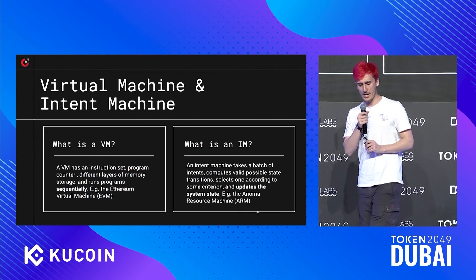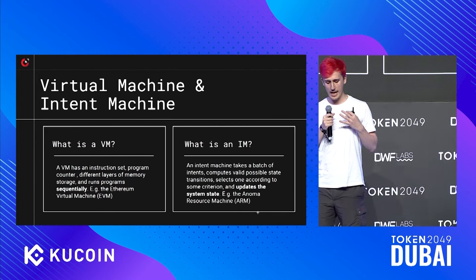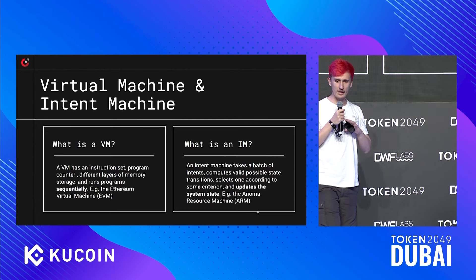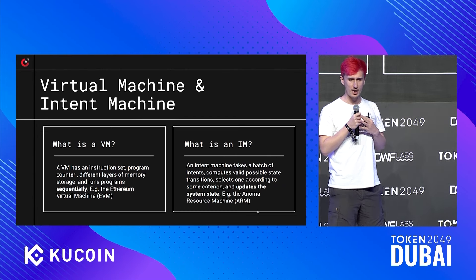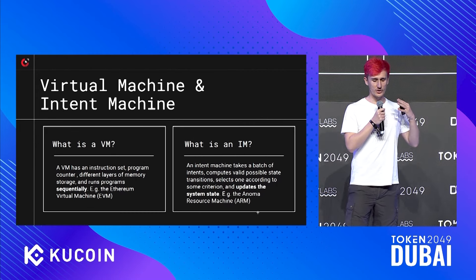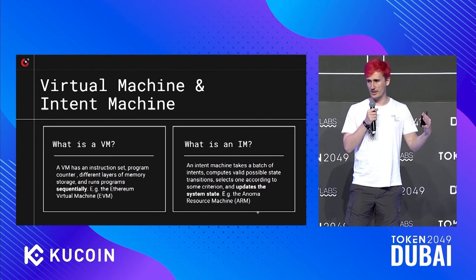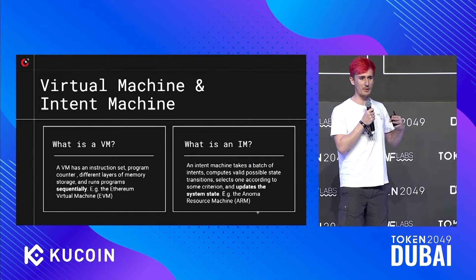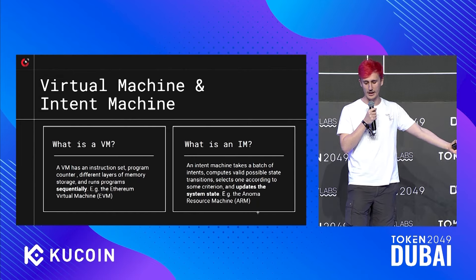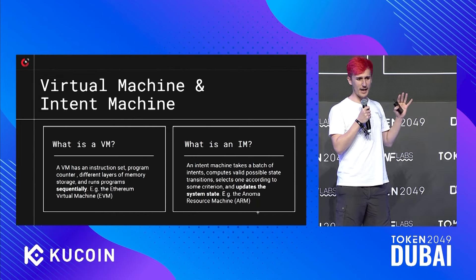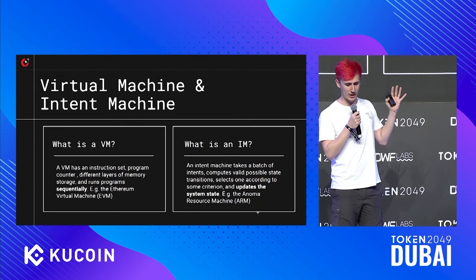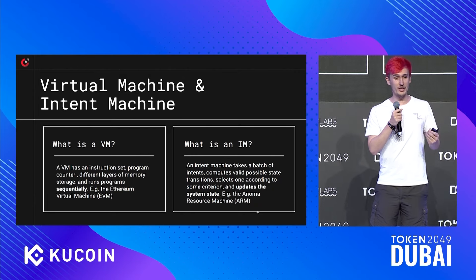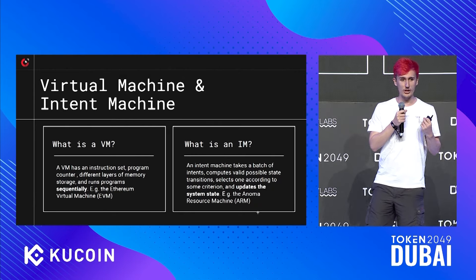An intent machine, on the other hand, takes a batch of intents and computes possible valid state transitions. Then, according to some criterion, selects what updates to apply to the system state. The criterions are either defined within the intents or by developers of applications. Currently, there are no generalized intent machines yet — so the Anoma resource machine is really the first generalized intent machine in existence.